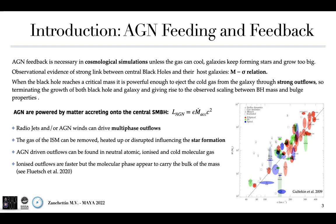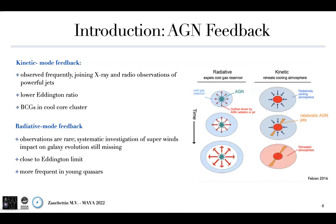AGN-driven winds have been found in the different phases of the interstellar medium: the neutral, ionized, and cold molecular phase. We know that the ionized outflows are the faster, but the molecular phase is the one that appears to carry the bulk of the mass. Therefore, there are two different modes of AGN feedback: the kinetic one and the radiative one. Here I can show a picture of these two modes by Fabian et al. 2016.